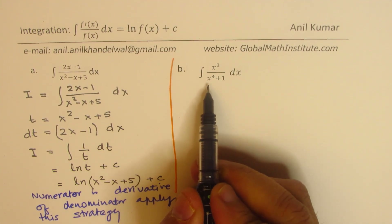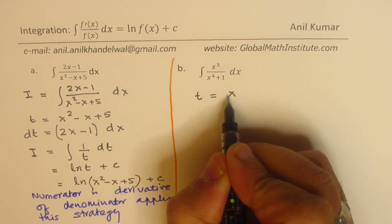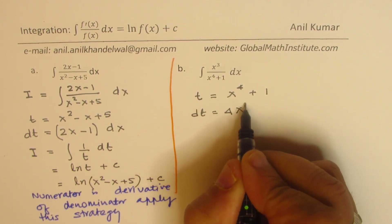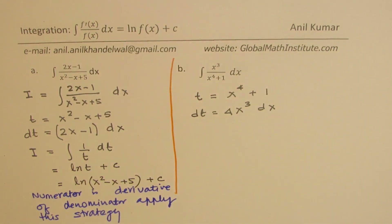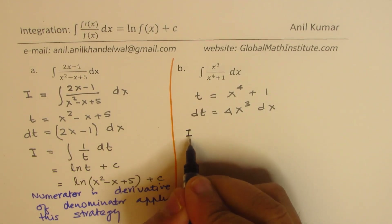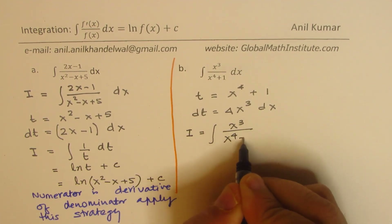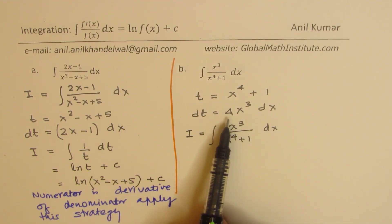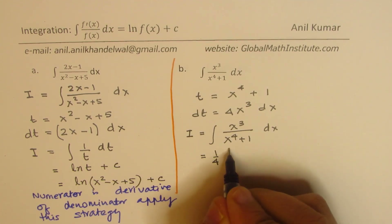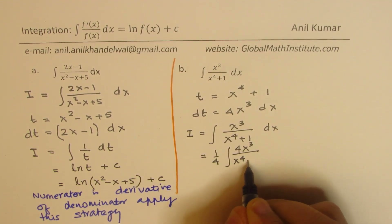Sometimes we may have to do some rework. We recognize that the derivative of x⁴ is related to x³. So we put t = x⁴ + 1, and we know dt = 4x³ dx. However, this doesn't directly match what we have — we need the integral of x³/(x⁴ + 1) dx.